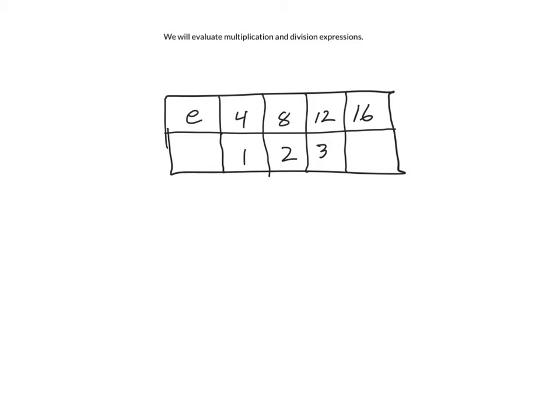Okay, so let's take a look at this table. So our top row is e, and this is e, multiply or divide. Okay, so we have 4 and we have 1 here. We have 8 and 2, 12 and 3. So what are we doing here?